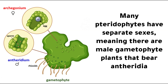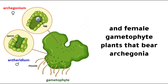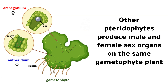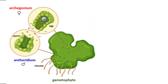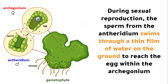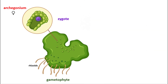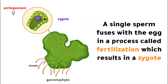Many pteridophytes have separate sexes, meaning there are male gametophyte plants that bear antheridia, and female gametophyte plants that bear archegonia. Other pteridophytes produce male and female sex organs on the same gametophyte plant. The sex organs grow on the underside of the gametophyte plant, meaning on the underside of the prothalus. During sexual reproduction, the sperm from the antheridium swims through a thin film of water on the ground to reach the egg within the archegonium. A single sperm fuses with the egg in a process called fertilization, which results in a zygote.